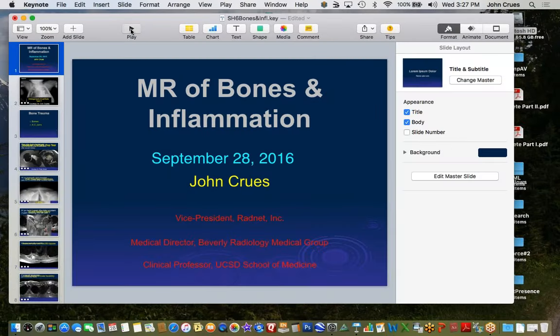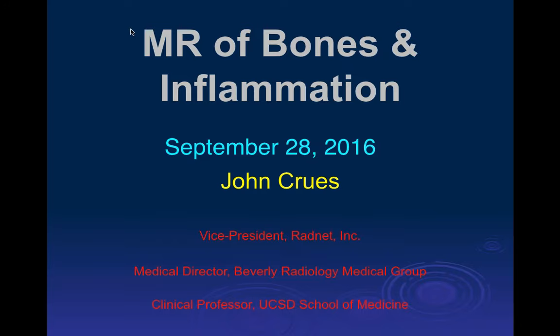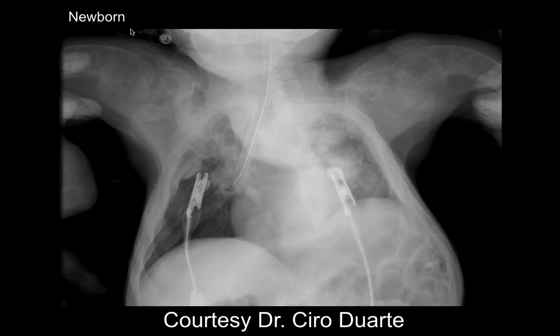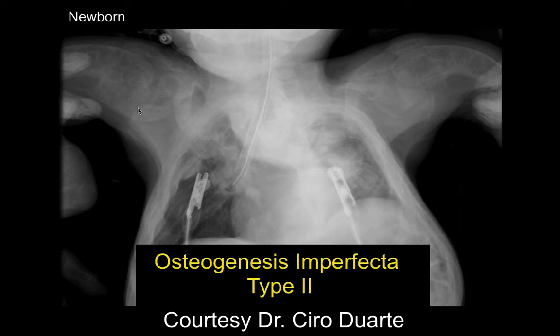Let's talk about bones and inflammatory conditions around the shoulder. We have a newborn frontal chest X-ray showing expansile lucent lesions of the bilateral humerus. You can also see the clavicles are involved.